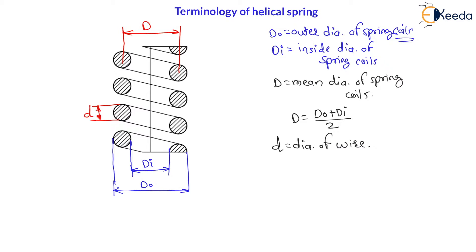The consecutive distance between two consecutive turns — the distance between two nearest turns — is called pitch. The distance between two nearest turns is called pitch. Therefore, this distance is called pitch, and it is represented by the symbol pitch.